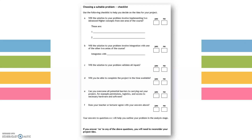One thing I would suggest you do is have a look at the checklist page, which is embedded into that large document I mentioned earlier. When you go through — for example, will the solution to your problem involve implementing two Advanced Higher concepts? If you picked to create a game with a high score table, the two concepts would probably be an array of objects and a bubble sort to sort your high scores table — both ticked, so that's met. You go down all the questions, and if the answer to any of them is no, then you basically can't do it for your project. They're quite broad, so you should be able to meet them fairly easily.